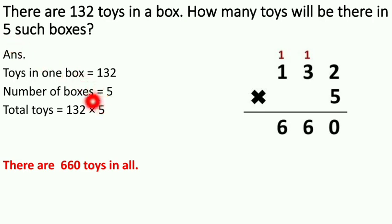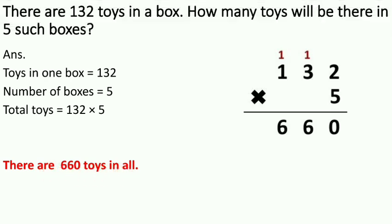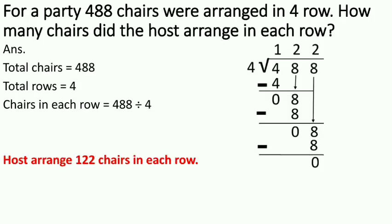Total toys is equal to 132 multiply by 5. 132 multiply by 5. So here also you have to do multiplication. So our final answer is there are 660 toys in all. How many toys will be there? Very good.